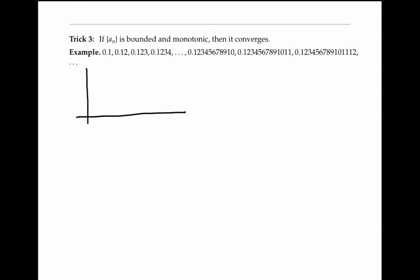It's a remarkable fact that if a_n is bounded and monotonic, then it has to converge. You might get some intuition for this by looking at a graph. If the a_n's are monotonically increasing but are bounded, then there's no place for them to go — they can't oscillate up and down because they're monotonically increasing. So it makes intuitive sense that they have to settle on some limit.